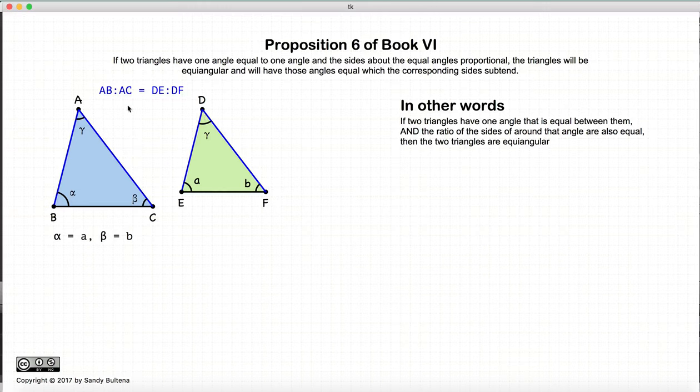So again, one equal angle and the ratio between the sides are the same for both triangles. If this condition is true, then the two triangles are equal angular.